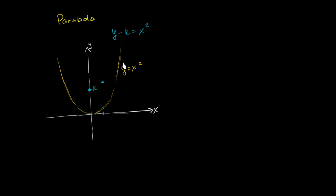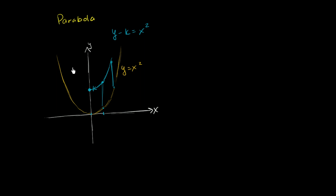So this curve is essentially the original curve shifted up by k. Making it y minus k equals x squared shifted it up by k — whatever value k is. The vertical distance between these two parabolas is a constant k.